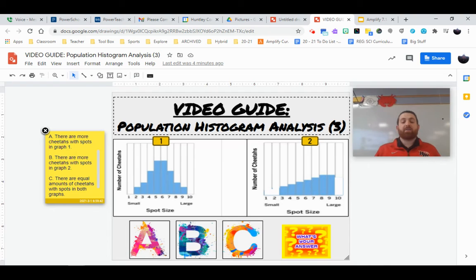So when we look at the graphs, when we look at the distribution of the traits, when we look at the variations seen, which of these best describes our populations.